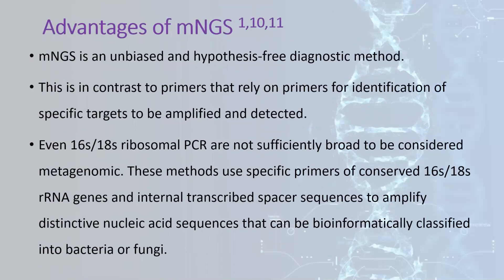The advantages of MNGS include that it is an unbiased and hypothesis-free diagnostic method, free of the subjectivity of interpretation from human analyzers. This is in contrast to methods that rely on primers for identification of specific targets. Even 16S and 18S ribosomal PCR is not sufficiently broad to be considered metagenomic, as these methods use specific primers of conserved 16S, 18S, or rRNA genes and internal transcribed spacer sequences to amplify distinctive nucleic acid sequences that are then bioinformatically classified into bacteria or fungi.